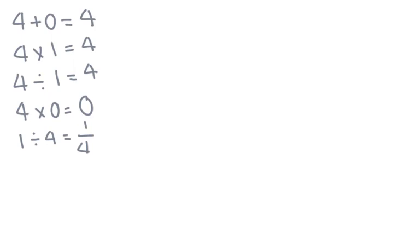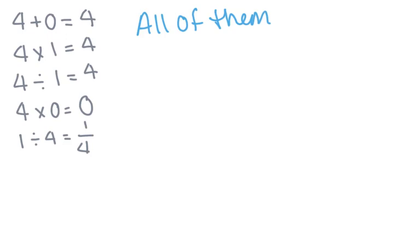We are going to start by looking at five different expressions: 4 plus 0 equals 4; 4 times 1 equals 4; 4 divided by 1 equals 4; 4 times 0 equals 0; and 1 divided by 4 equals 1 fourth. How many of these statements are true? All of these expressions are true.